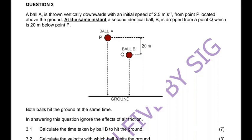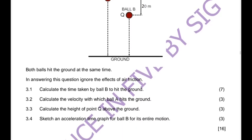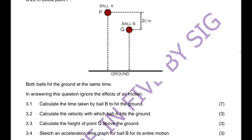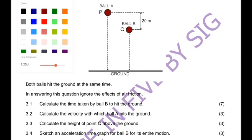We move on to question three. A ball A is thrown vertically downwards with an initial speed of 2.5 meters per second from point P located above the ground. At the same instant, a second identical ball B is dropped from point Q, which is 20 meters below point P. Always read the full question first, then let's start.